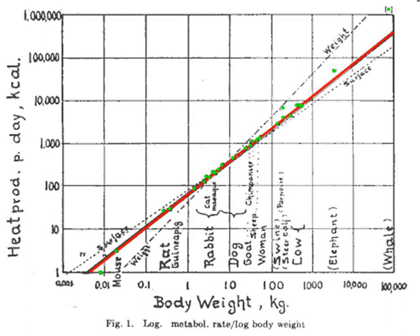Kleiber's law, like many other biological allometric laws, is a consequence of the physics and/or geometry of animal circulatory systems. Max Kleiber first discovered the law when analyzing a large number of independent studies on respiration within individual species. Kleiber expected to find an exponent of two-thirds, and was confounded by the exponent of three-quarters he discovered.